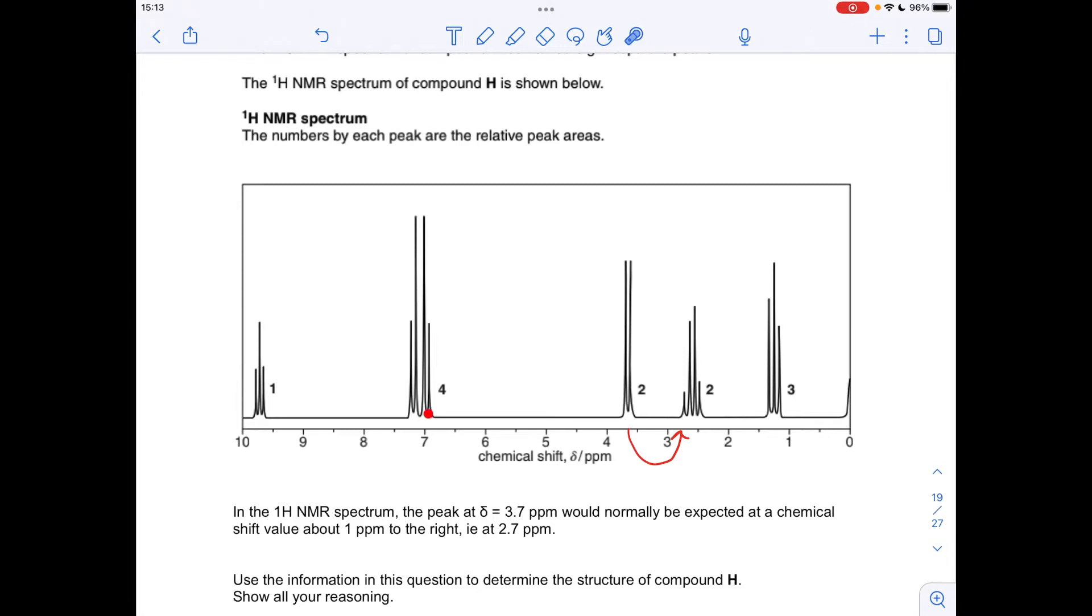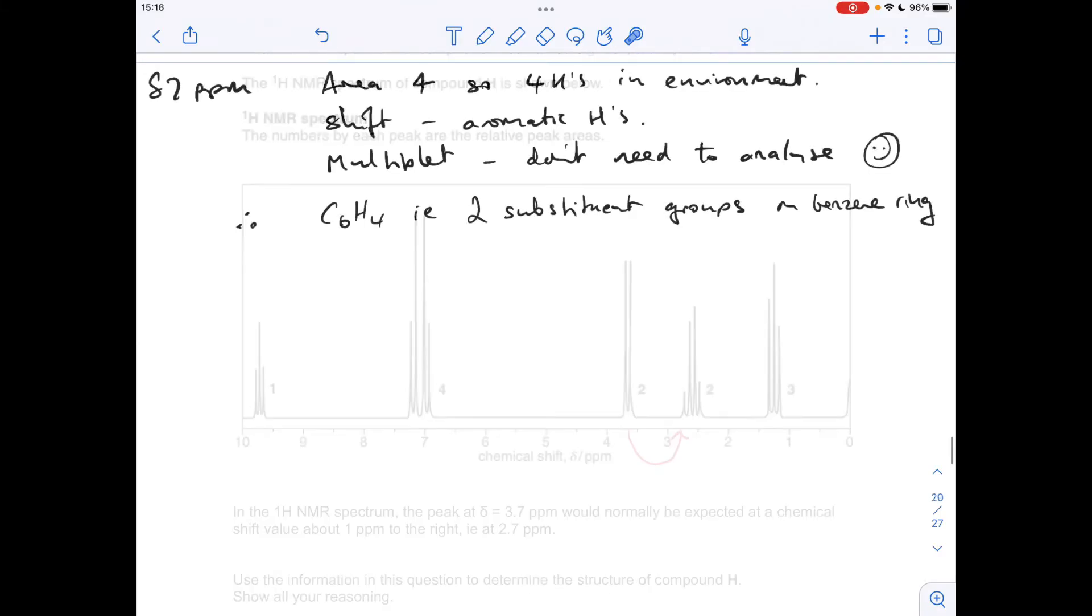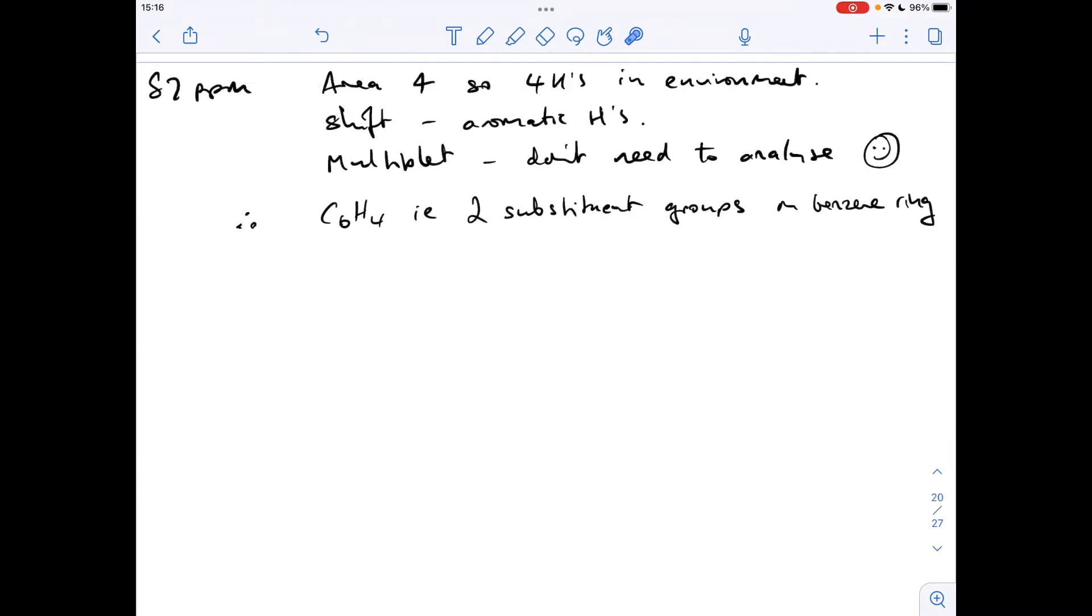And the great thing is we don't need to analyse splitting patterns of aromatic protons. So we've got a benzene ring with 4 hydrogens on, so therefore there must be 2 substituent groups on the benzene ring. So there's all that information written up there.